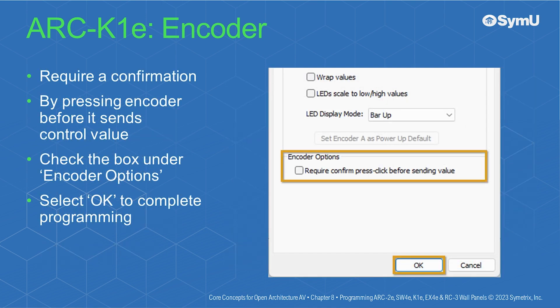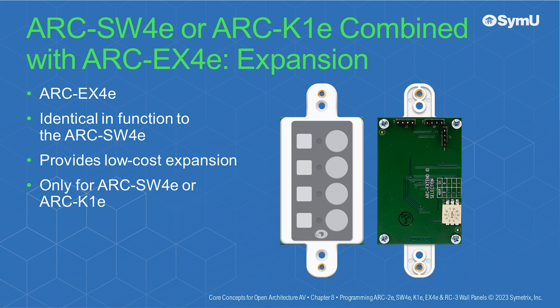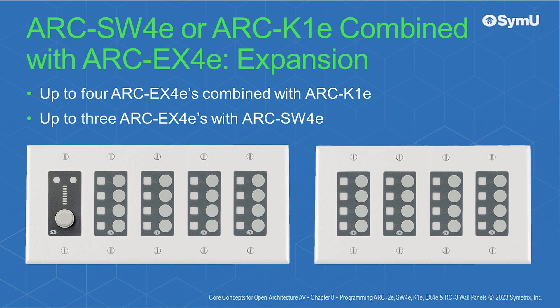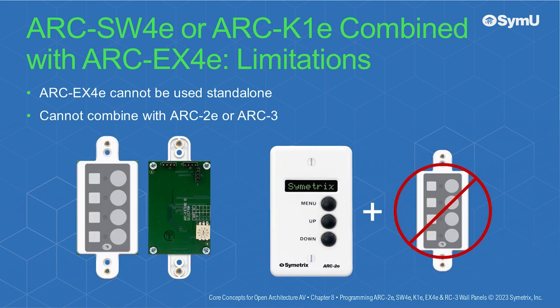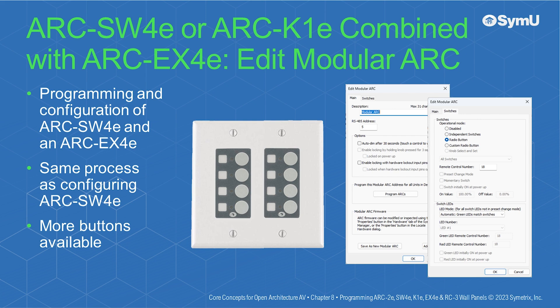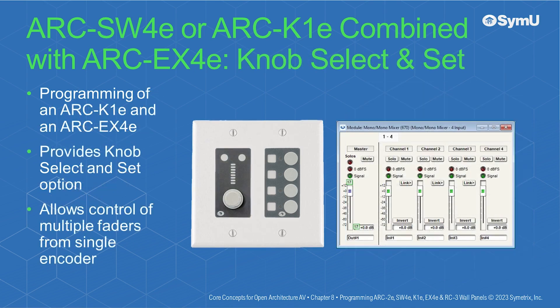To require confirmation by pressing the encoder before it sends the control value, check the box under Encoder Options, then select OK to complete Arc K1E programming. The Arc EX4E is identical in function to the Arc SW4E and provides a low-cost method to expand the capabilities of either an Arc SW4E or an Arc K1E. Up to 4 Arc EX4E units can combine with a single Arc K1E, and up to 3 Arc EX4E can combine with a single Arc SW4E. The Arc EX4E cannot be used standalone, nor can it be combined with an Arc 2E or Arc 3.